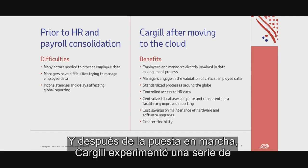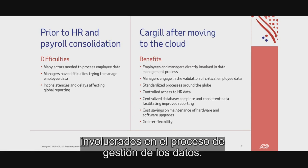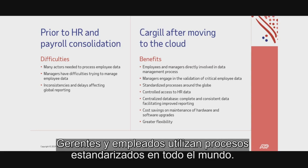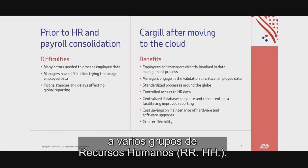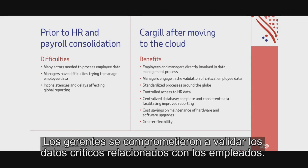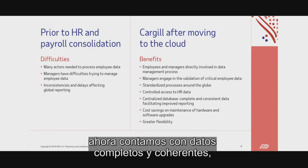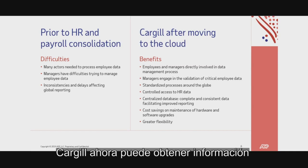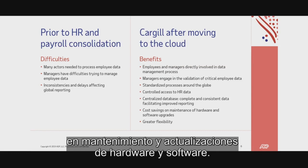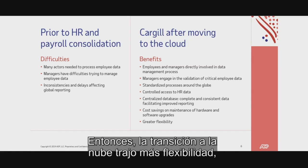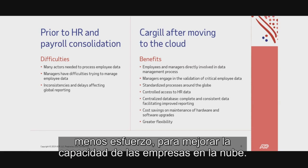Following the go-live, Cargill experienced a number of different benefits. For the first time, employees and managers are directly involved in the process of managing their data, using standardized processes around the globe. In agreement with our governance, risk, and controls team, proportionate and controlled access to HR data has been delivered to various HR groups. We now have complete and consistent data — reporting benefits greatly, and Cargill is able to obtain up-to-date information about its employees. For cost benefits, we're seeing savings on maintenance and hardware and software upgrades. With cloud services, you only pay for what you need, so the move to the cloud has brought greater flexibility — the system can grow or shrink as the business requires, with less effort needed to upscale cloud capacity.